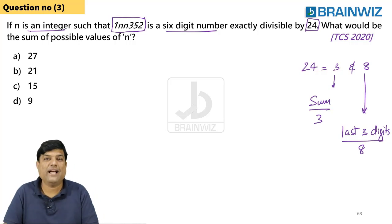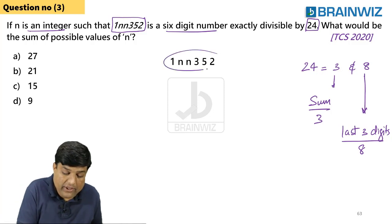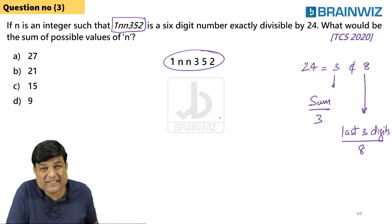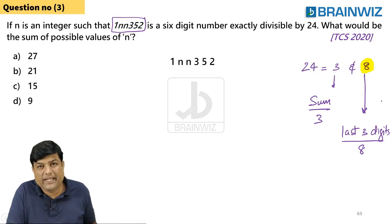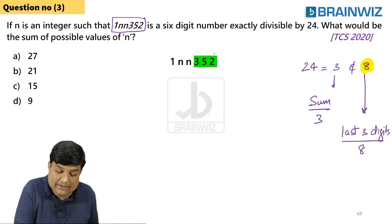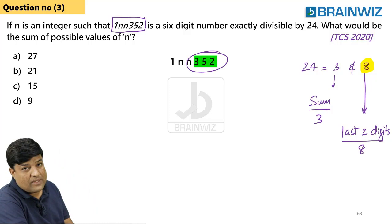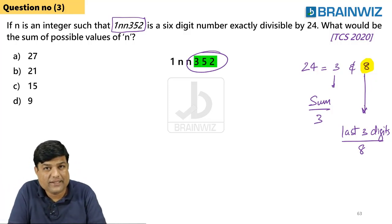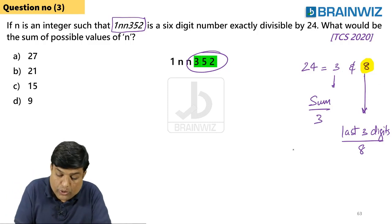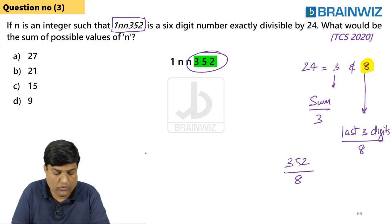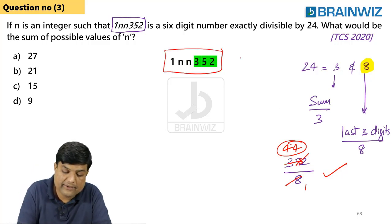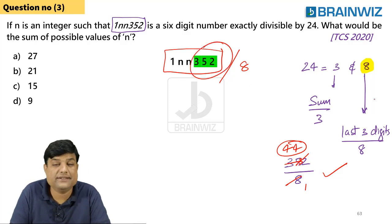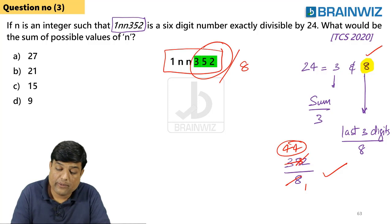First condition — divisibility by 8: the last 3 digits are 352. Is 352 divisible by 8? Yes — 8×44=352. So this number satisfies the divisibility by 8 condition because the last 3 digits are divisible by 8.